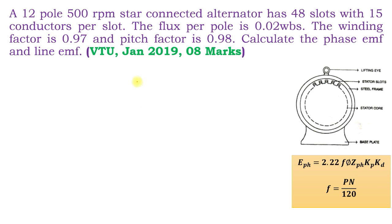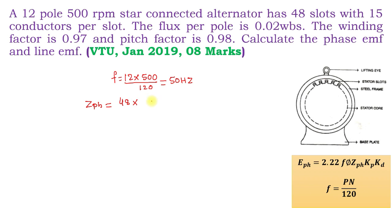In this problem, we calculate frequency: f = 12 poles × 500 rpm ÷ 120 = 50 hertz. Sometimes, depending on the poles and speed, we may get 60 hertz also. Then ZPH = total number of slots (48) × 15 conductors per slot ÷ 3 = 240 conductors per phase.